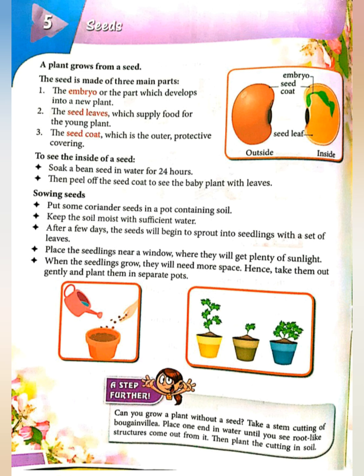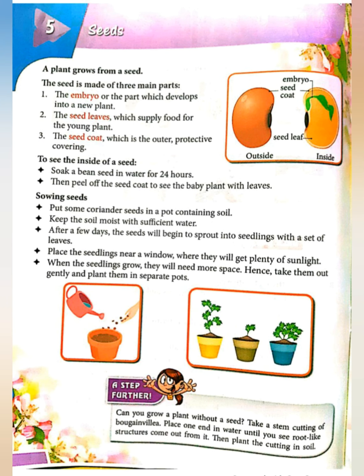Lesson 5: Seeds. Children, you know a plant grows from a seed. The seed is made of three main parts. First, the embryo or the part which develops into a new plant. Second, the seed leaves which supply food for the young plant. Third, the seed coat which is the outer protective covering.